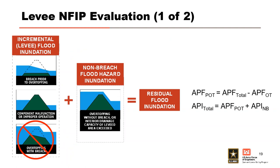For levees, we calculate the residual flood inundation to make a recommendation for National Flood Insurance Program (NFIP) accreditation. For NFIP purposes, the AEP of the residual flood inundation is the total annual probability that the levee will be inundated due to levee breach prior to overtopping, component malfunction or improper operation, or overtopping without breach. To avoid double counting, overtopping with breach is excluded. Therefore, the estimated mean annual probability of inundation (API) requires combining the APF for all prior-to-overtopping risk-driving PFMs (APF-POT) with the annual probability of inundation due to overtopping without breach (API-NB).